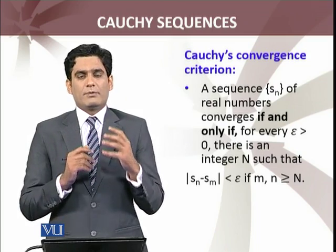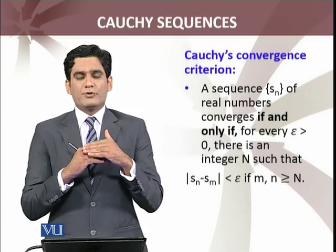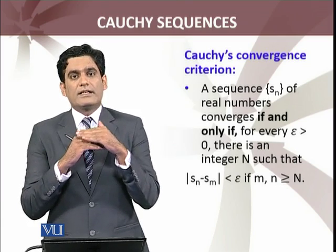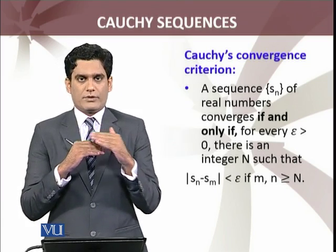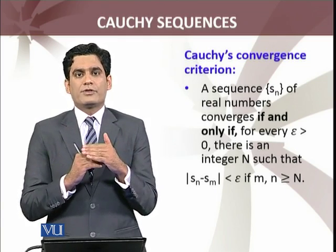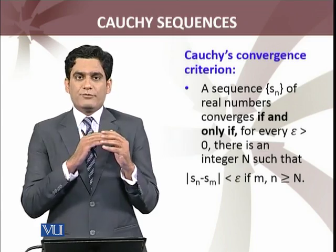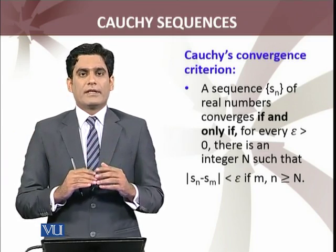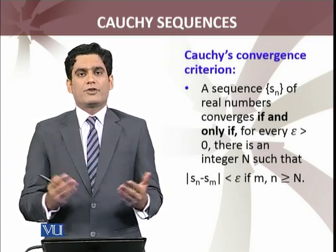The absolute value of the difference of sn minus sm is less than epsilon. Informally, I told you that we can narrow down the difference of sequence terms as much as we want. Sequence terms are getting closer and closer to each other as we approach towards infinity. This is the graphical meaning of Cauchy sequence.